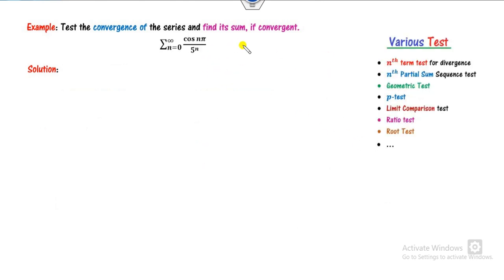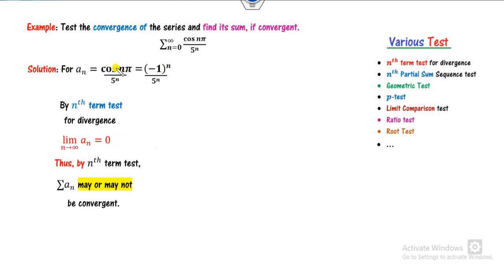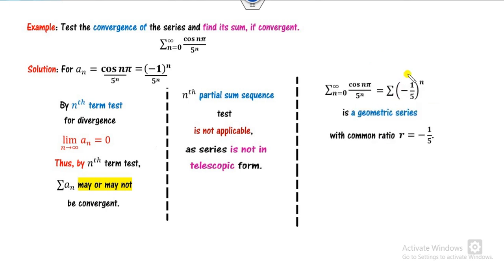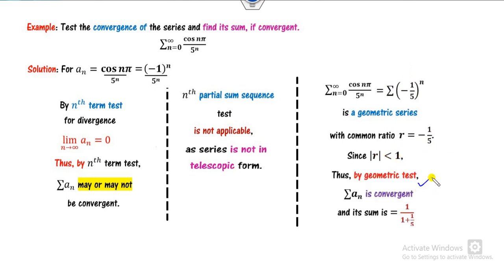Look at this example. The nth term test: taking cos and π gives a limit of 0 as n approaches infinity, so the nth term test is not applicable. The nth partial sum sequence is not applicable either, as it is not in telescopic form — both first two tests fail. Applying the geometric series test: the common ratio r is identified, and |r| < 1, so it is a convergent series. The sum is a/(1-r), with the series starting from n=0 and first term 1, giving the answer 5/6.